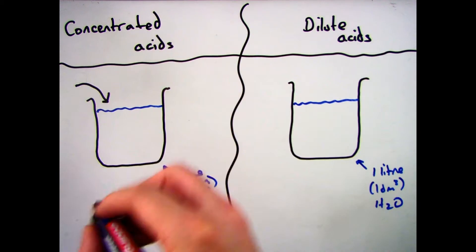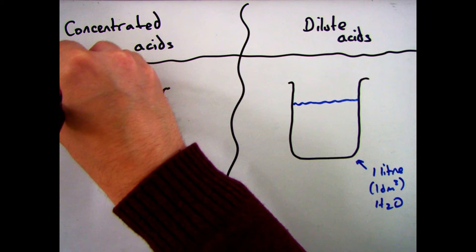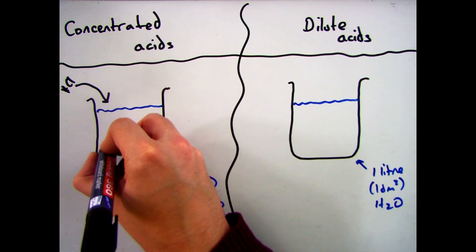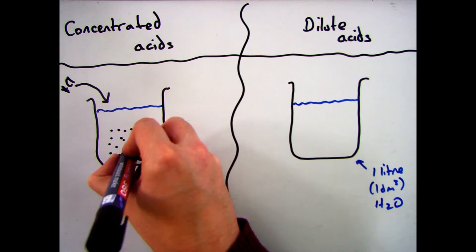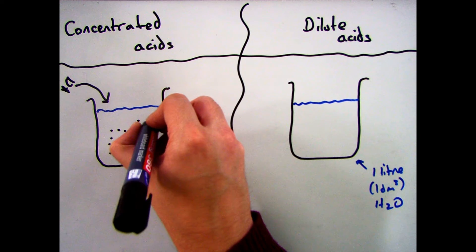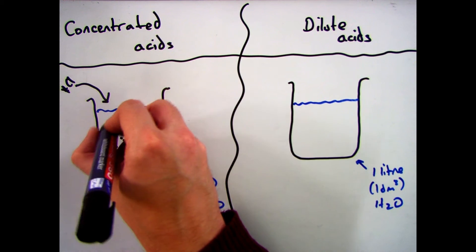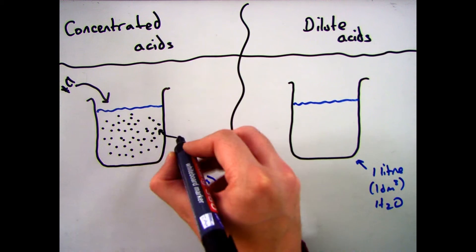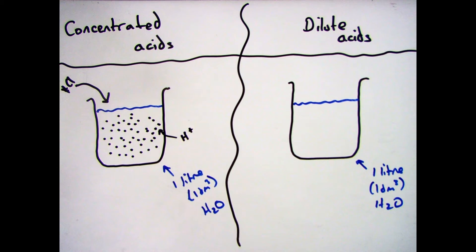So if I had a litre of water, when we talk about what the difference between concentrated and dilute means, it's all to do with the number of particles in there. When we're talking about acids, it's to do with the number of hydrogen ions. If we look at a concentrated acid here, you can see there are lots and lots of H+ ions in there — hydrogen ions — so we class that as concentrated.